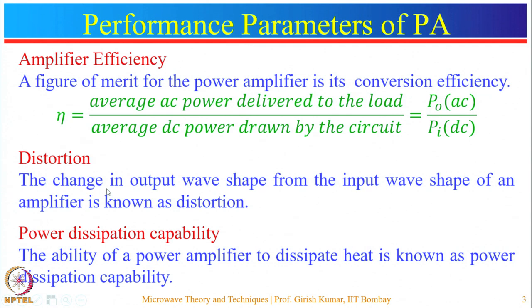In power amplifiers, the transistors must be capable of dissipating high power. In small signal amplifiers, transistors are made of very small size, whereas in power amplifiers the size of the transistor is chosen relatively larger — it could be a few centimeters or even more, compared to just a few millimeters for small signal amplifiers.